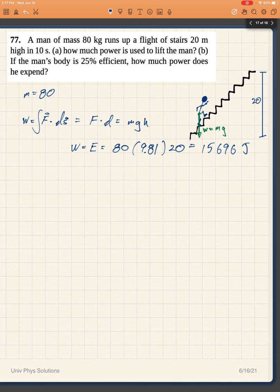Now that is the energy. What is the power? Well, the power is the change in energy, or the energy output, over the time. We know that this energy was expended in 10 seconds. So then the power is going to be equal to 15,696 joules divided by 10 seconds, which will give me watts. So the power we can say is 1.6 kilowatts.